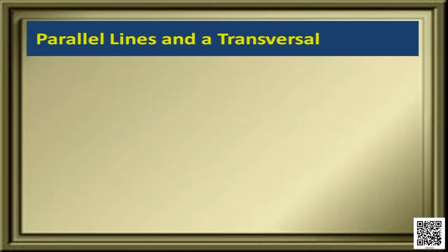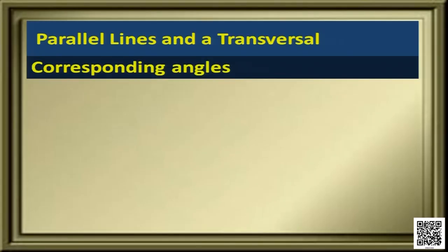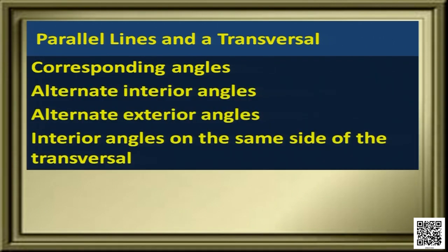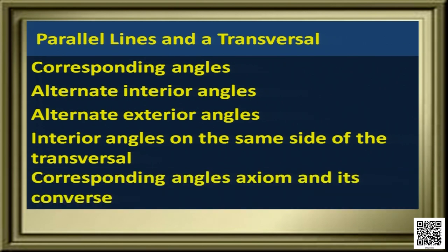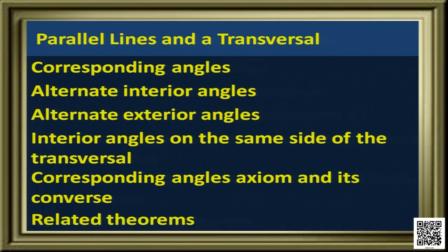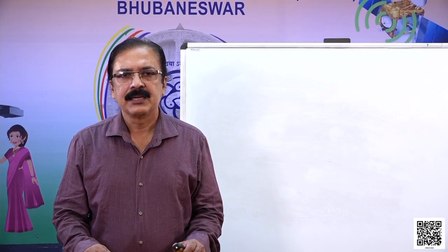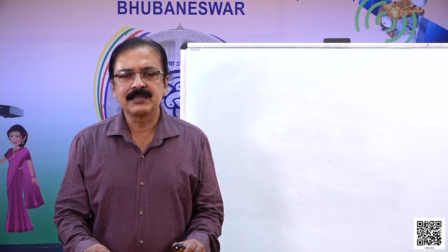Today's lesson is about parallel lines and a transversal. We will learn about corresponding angles, alternate interior angles, alternate exterior angles, interior angles on the same side of the transversal, the corresponding angles axiom and its converse, and some related theorems. Let's start with parallel lines and transversal.